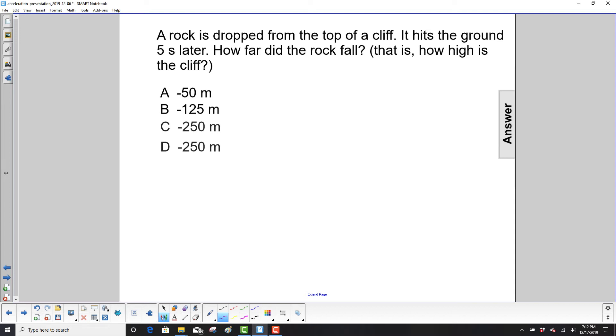A rock is dropped from the top of a cliff, so the initial velocity here is zero. It hits the ground five seconds later. How far did the rock fall?